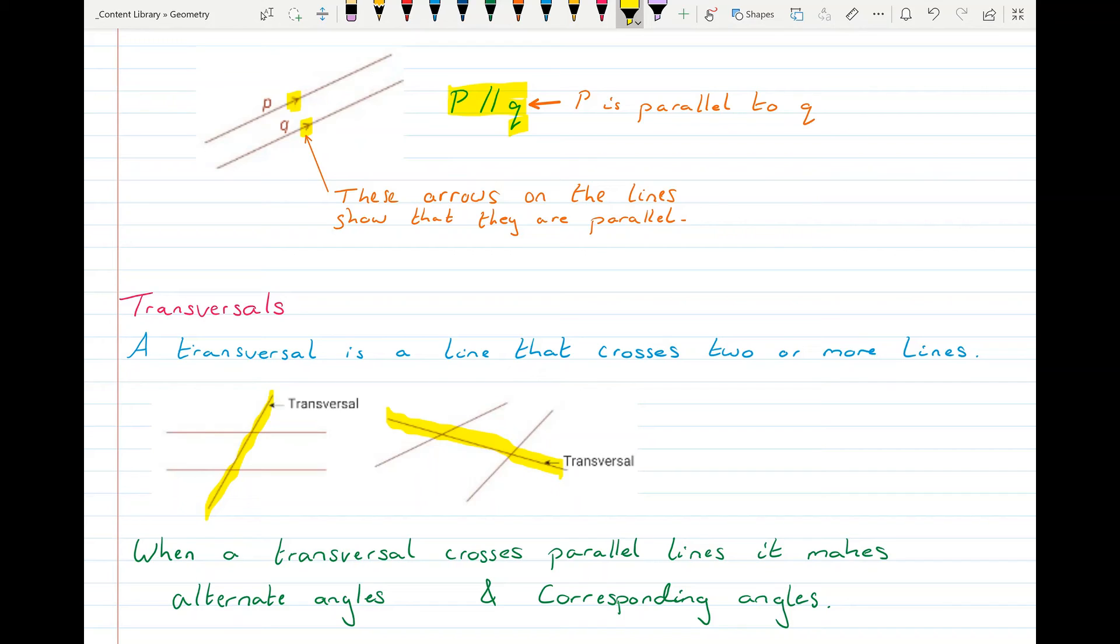And when the transversal crosses parallel lines, it's going to create alternate angles and corresponding angles. So we met vertically opposite angles previously. Now we'll be talking about corresponding and alternate.